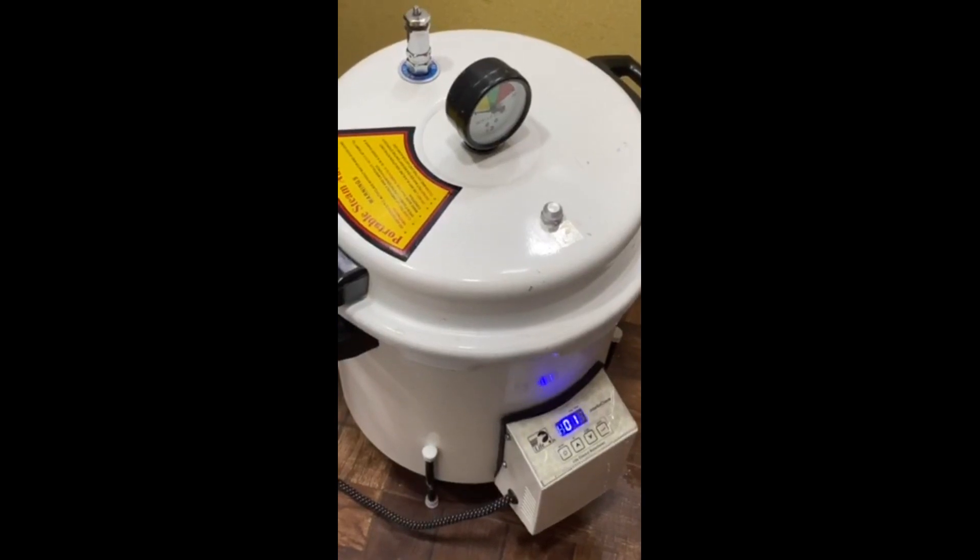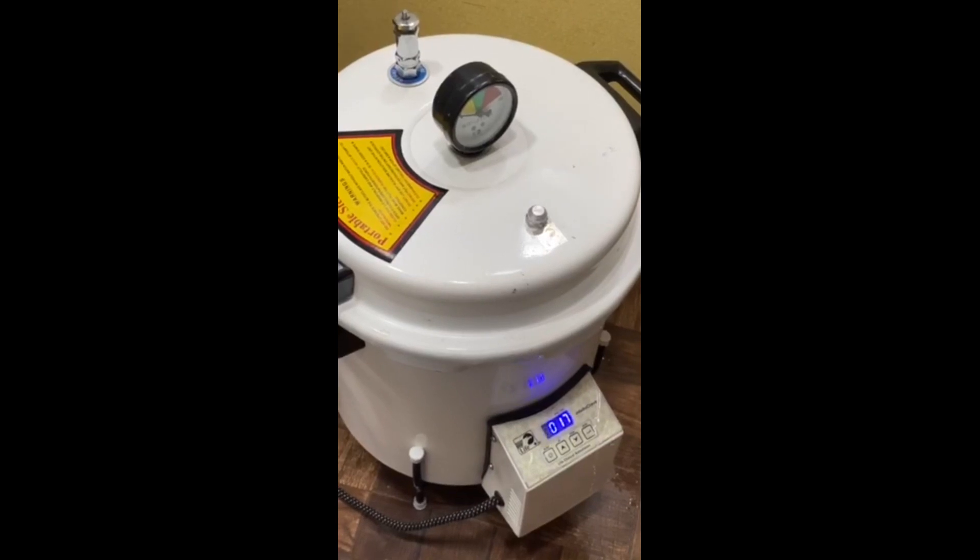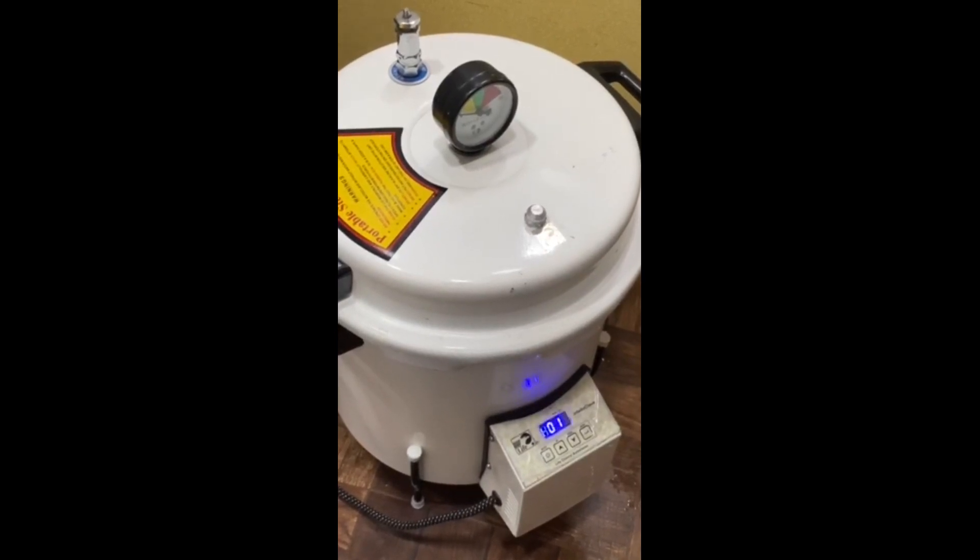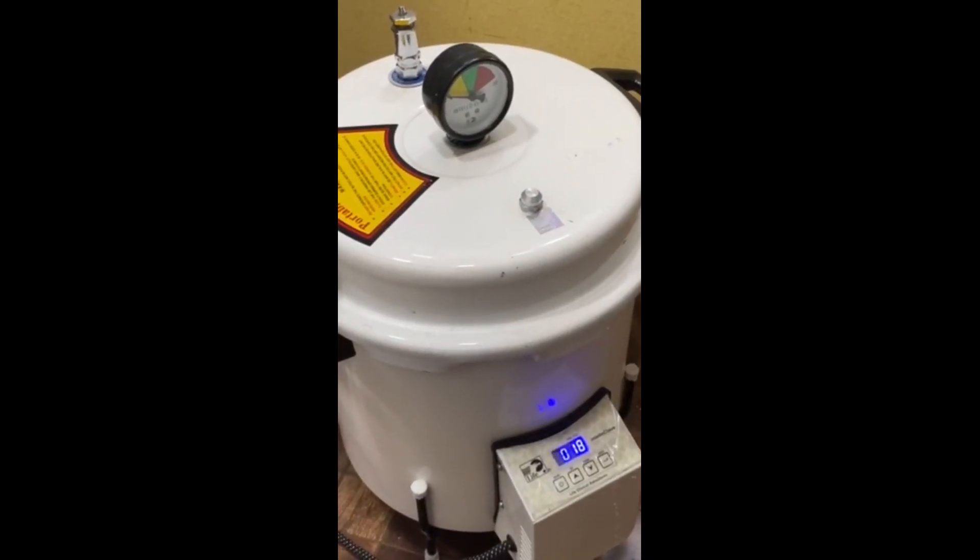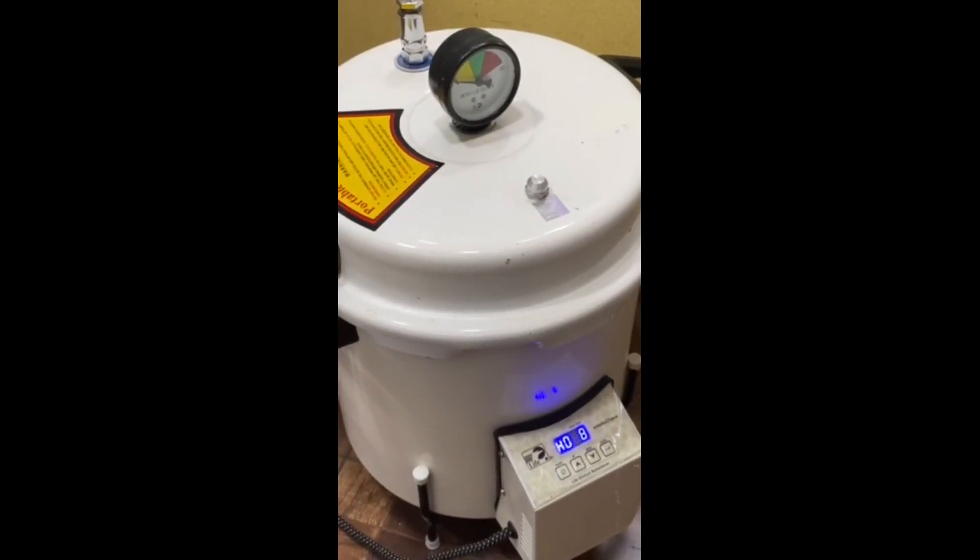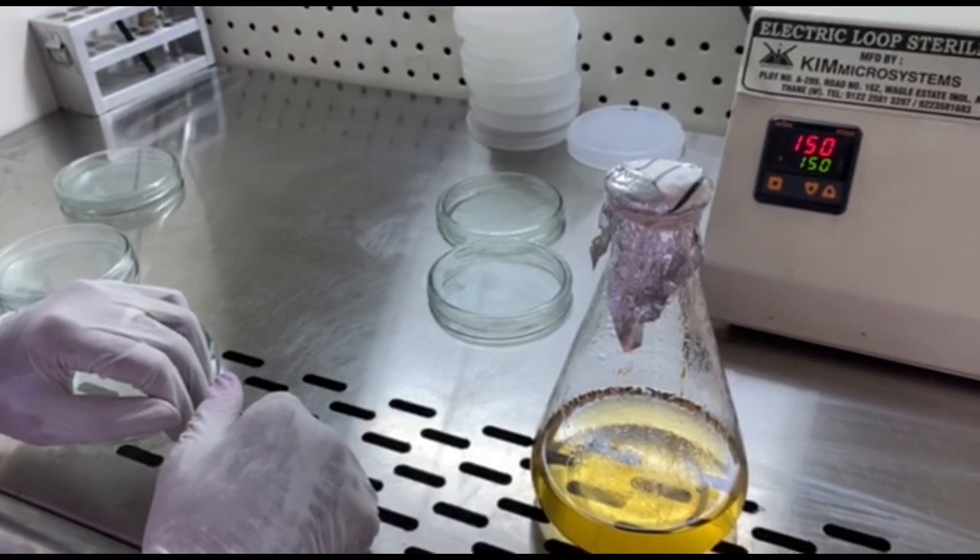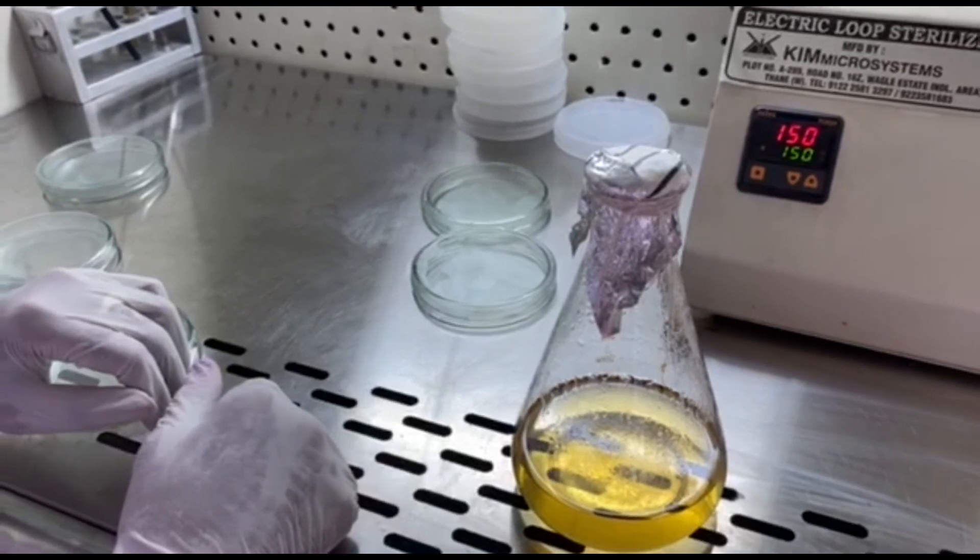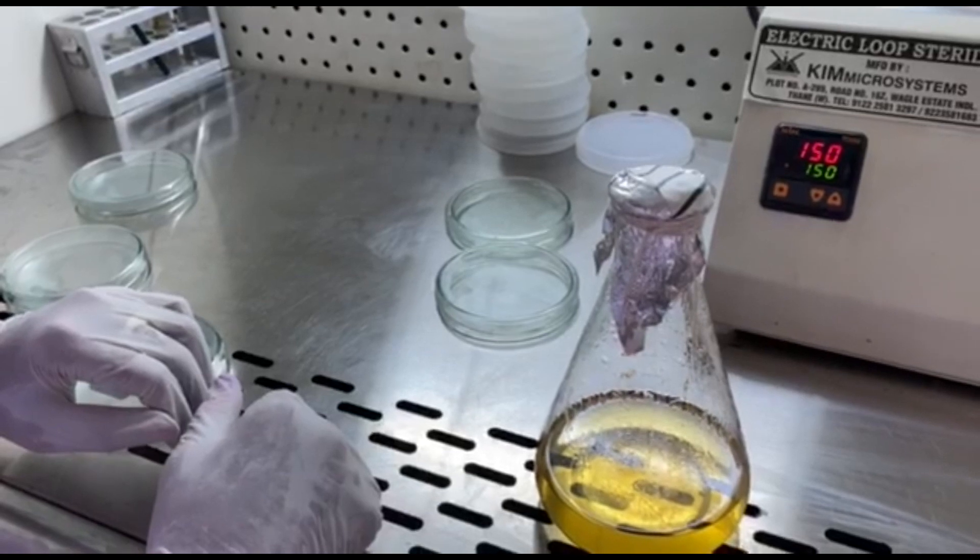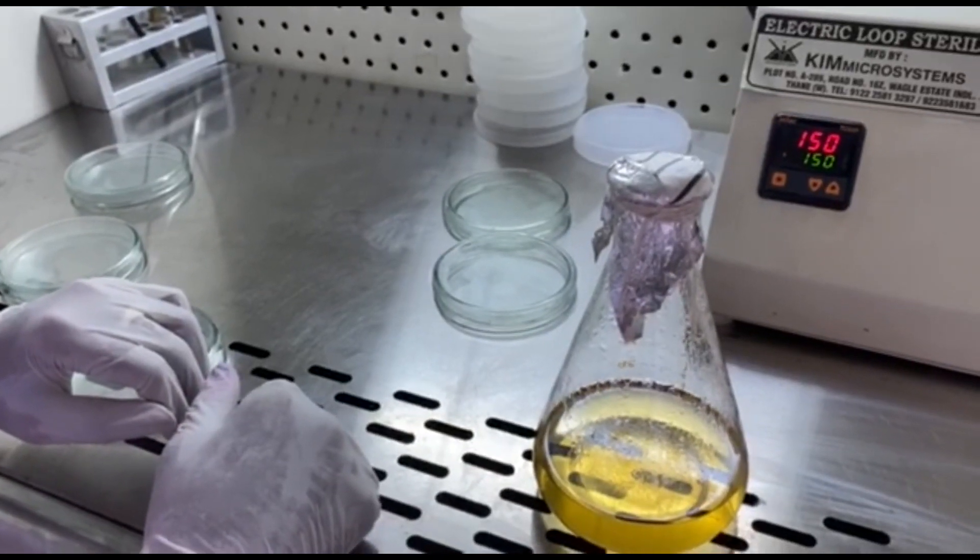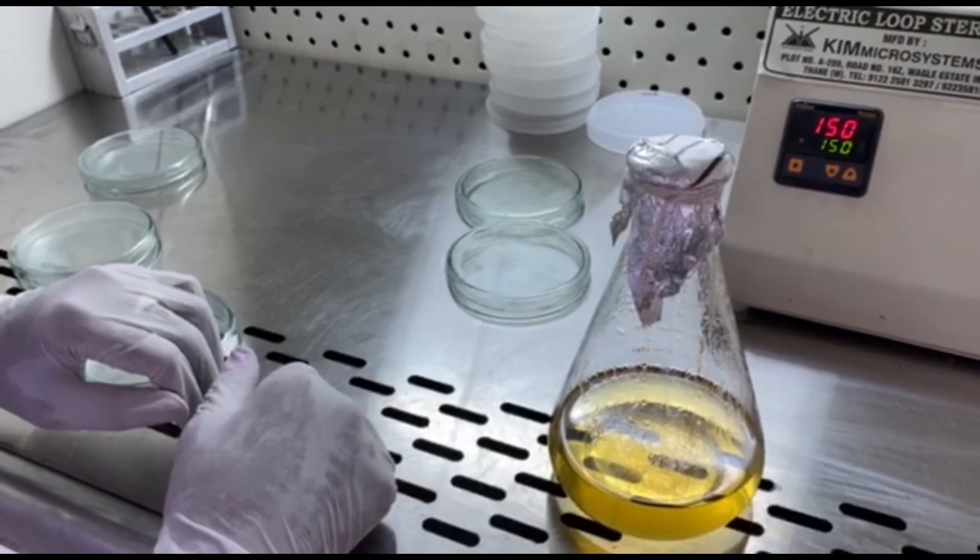So now we have kept the flask for autoclave. Autoclave will be done for 15 minutes at 121 degree Celsius with 15 Pascal as pressure. Once autoclaving is done, you can remove the flask after it has cooled down, that is the pressure has come down in the autoclave. I will prepare a separate video on how to start the autoclave or how does the autoclave work. That will be another video altogether.